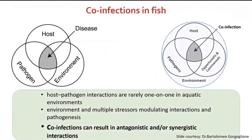This slide shows co-infections in fish. Disease occurs when the perfect conditions align — a virulent pathogen, a weakened host, and a bad environment together promote disease. Co-infections usually arise because the host is already exposed to many commensal and opportunistic microbes present in the aquaculture environment, especially in open systems.